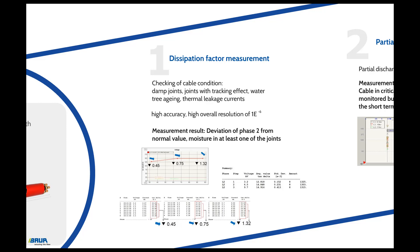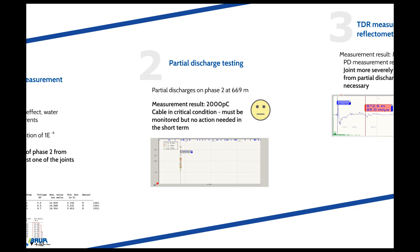A high level of accuracy and an overall resolution of 1×10⁻⁶ are necessary for the identification of damp joints. In our example, the dissipation factor measurement shows a deviation of phase 2 from the normal value, which leads to the conclusion that there is moisture in at least one of the joints. The subsequently performed partial discharge testing identifies partial discharges on phase 2 after a length of 669 m. The partial discharge level of 2000 pC leads to the conclusion that the cable is in a critical condition, but the results of the partial discharge testing do not necessitate immediate action.